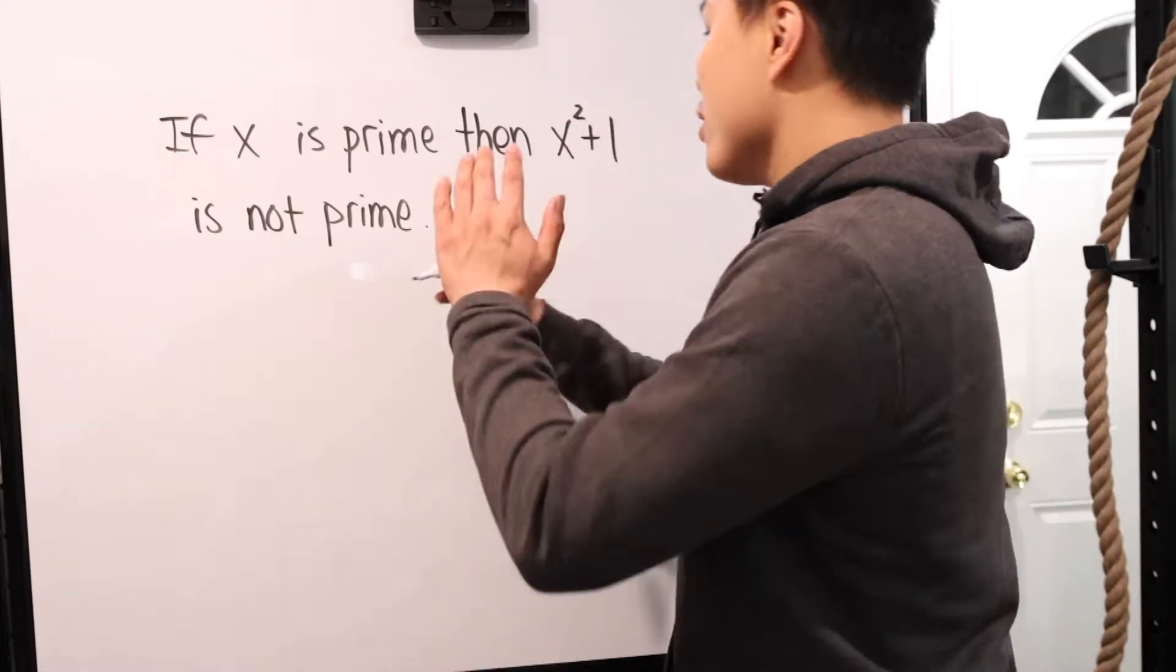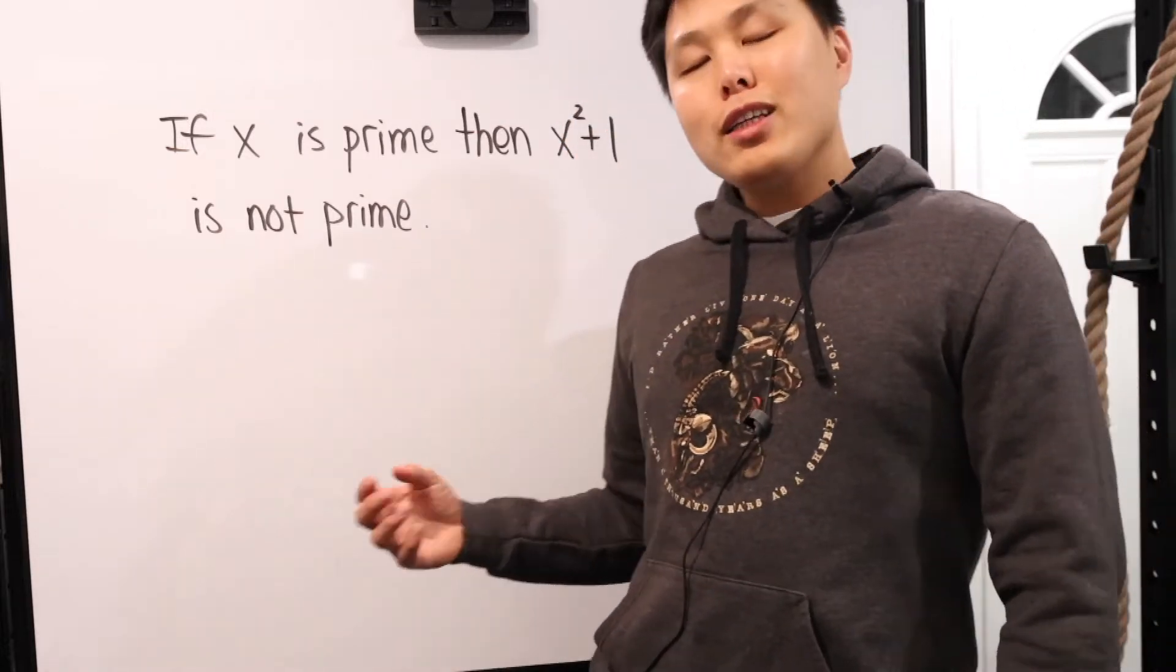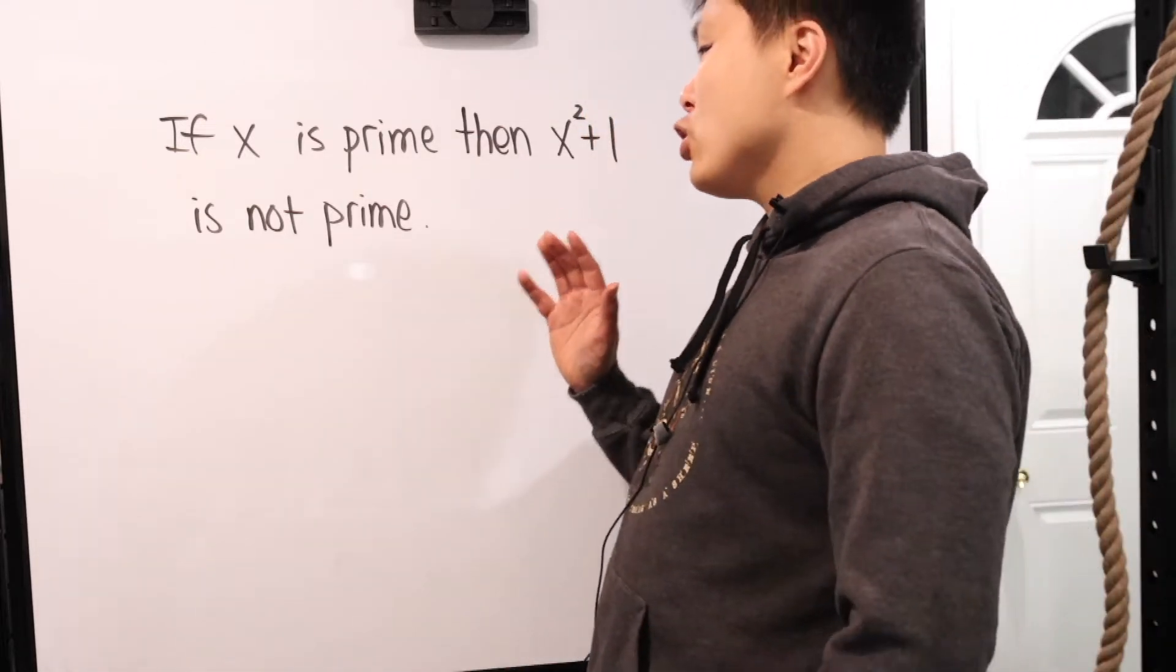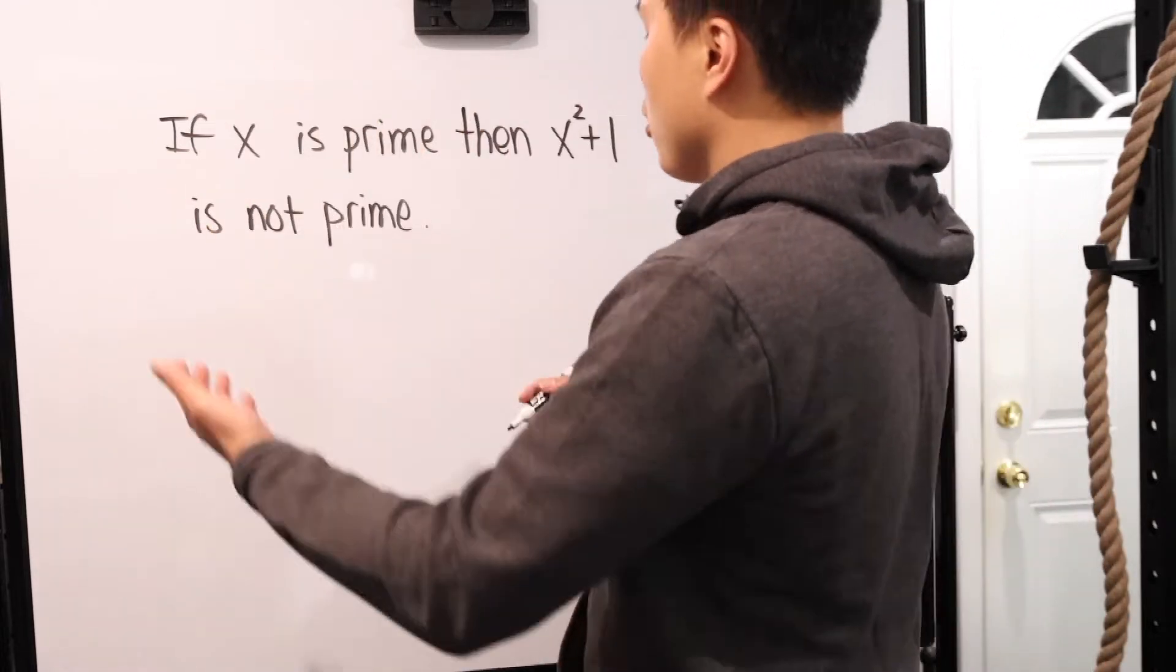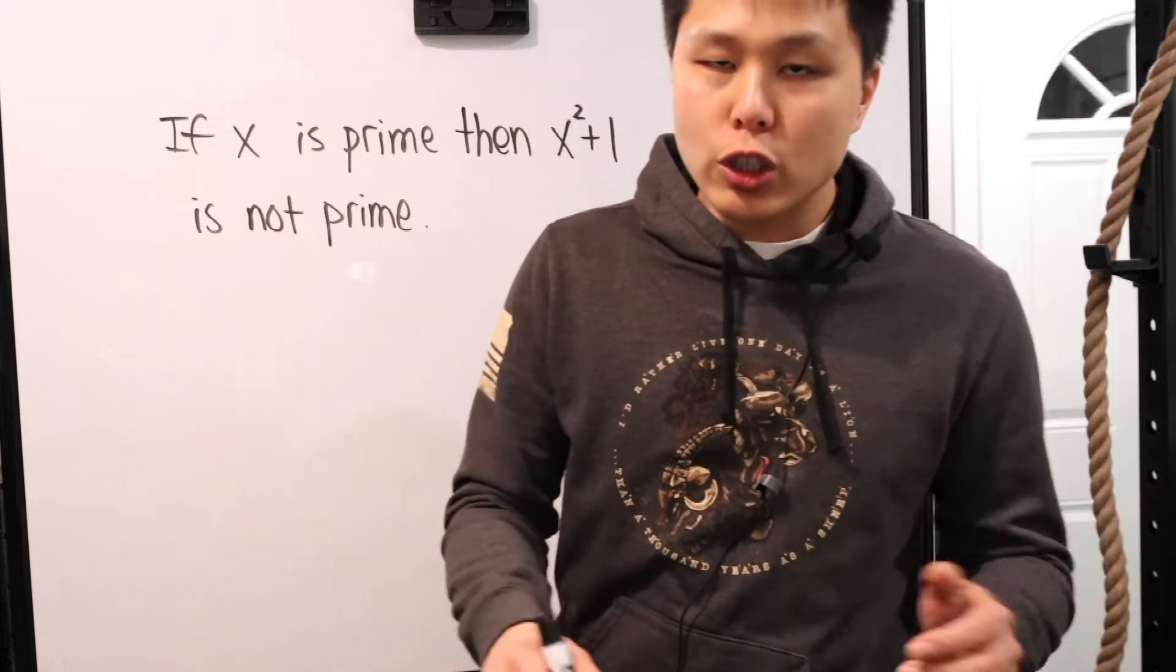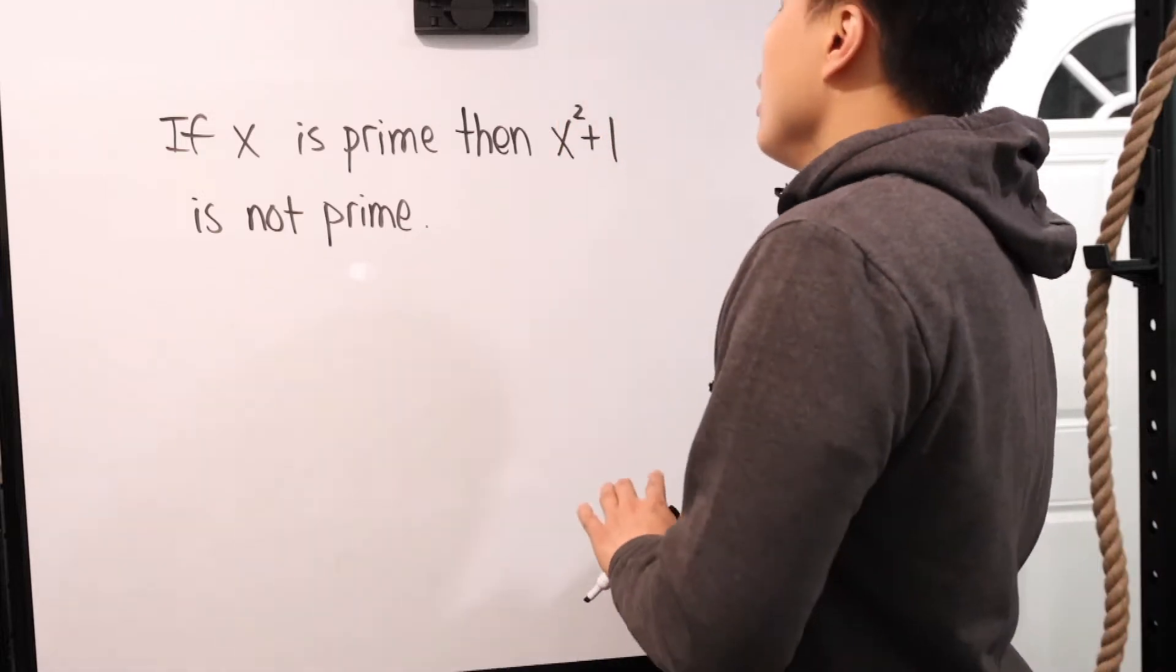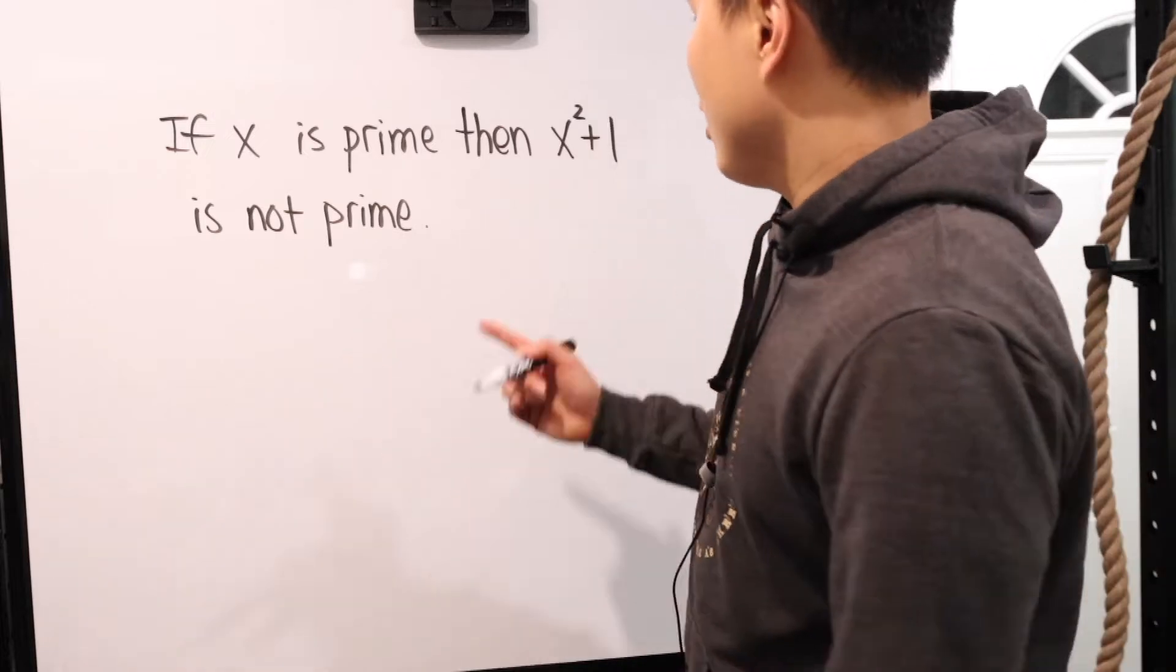So let's look at another example. If x is prime, then x squared plus one is not prime. Let's hope it's false. Let's just assume it's false. Try to find some example until we exhaust all of our mental capacity in showing that this is false, then it might be true. And then we have to figure out a way to prove it. So if x is prime, then x squared plus one is not prime. Well, by definition of prime, basically it's a number that can only be broken down into the number itself times one. One is not a prime. So remember that. If that's the case, let's just choose the smallest prime and then work from there.